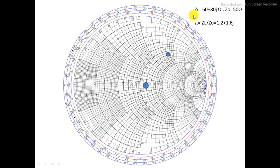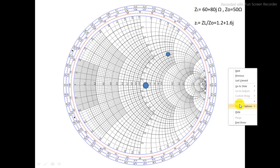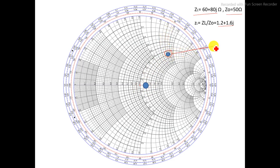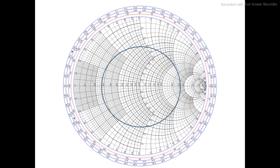Now I have taken a load value ZL equals 60 plus 80j ohms. The characteristic impedance Z0 is 50 ohms. So the normalized ZL equals ZL divided by Z0, which gives 1.2 plus 1.6j. I find 1.2 on the Smith chart — this circle belongs to 1.2 — and plus 1.6j in the upper half. This is my normalized load point ZL = 1.2 plus 1.6j. From the center to this point I draw a circle — this is the constant VSWR circle.